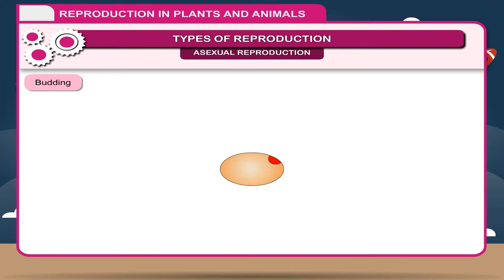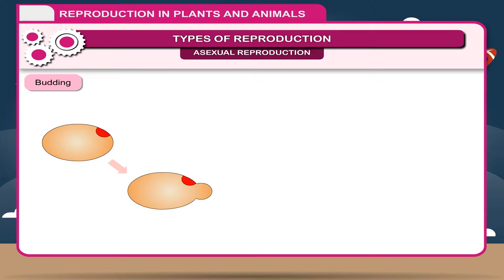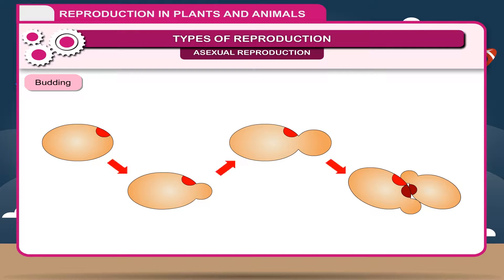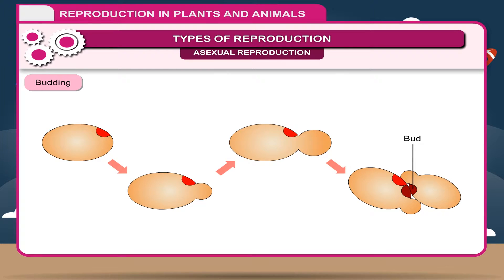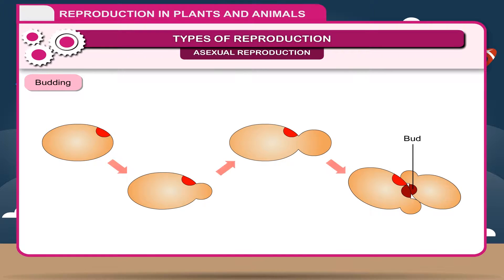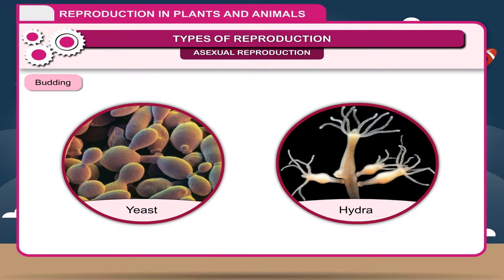Budding. Budding is another method of asexual reproduction in which an outgrowth from the parent is produced, which is called a bud. The nucleus of the parent cell divides into two and one passes into the bud. After several cell divisions, the outgrowth is detached from the parent and behaves like an individual organism. For example, yeast, hydra, etc.